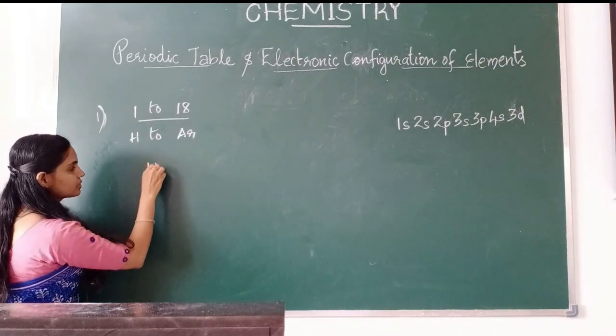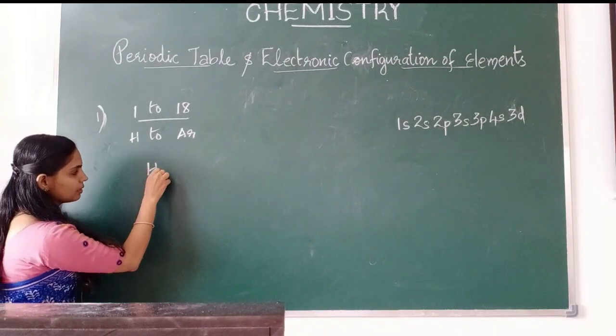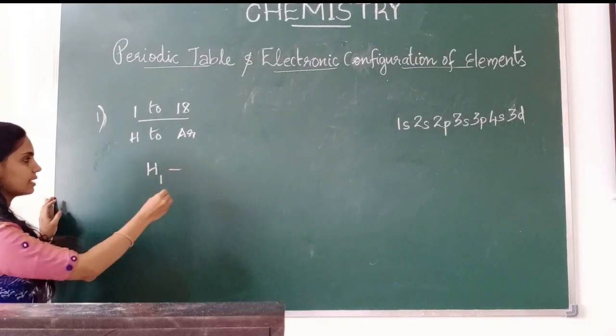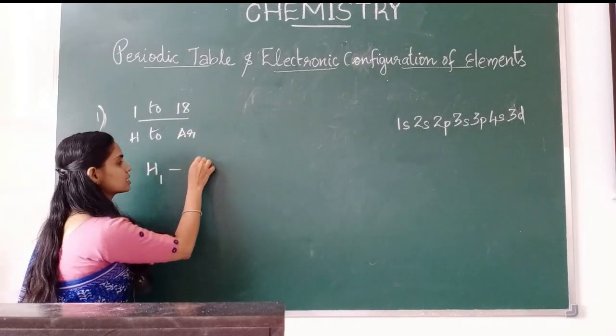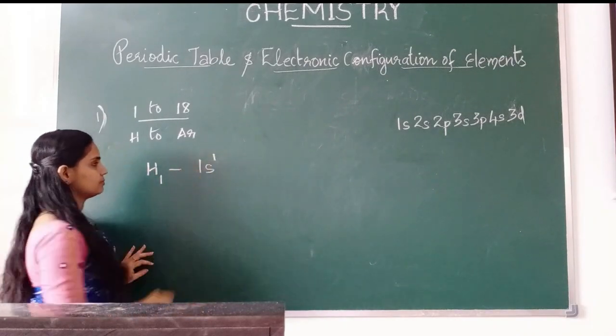Example: hydrogen. Hydrogen has atomic number 1, so its electronic configuration is 1s1.